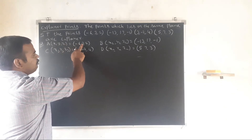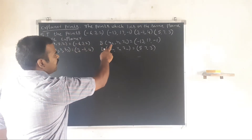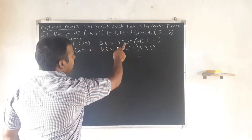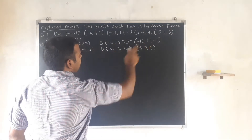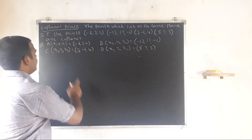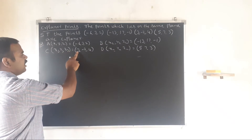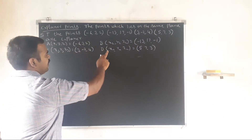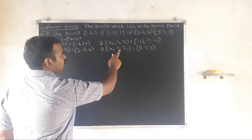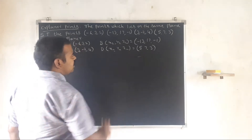Label the points: A: (x1, y1, z1) equal to (-6, 3, 2). B: (x2, y2, z2) equal to (-13, 17, -1). C: (x3, y3, z3) equal to (3, -2, 4). D: (x4, y4, z4) equal to (5, 7, 3).